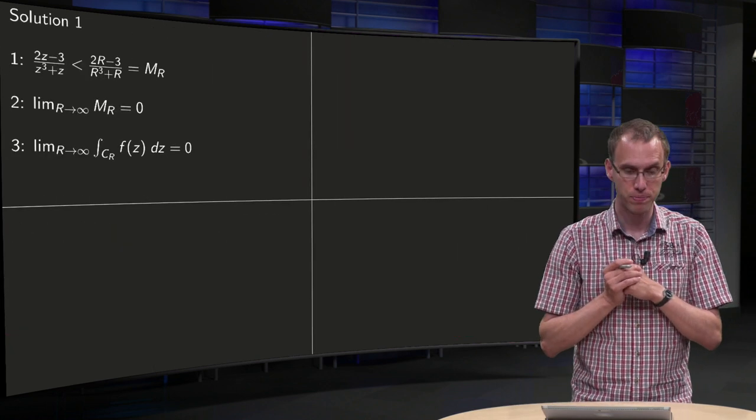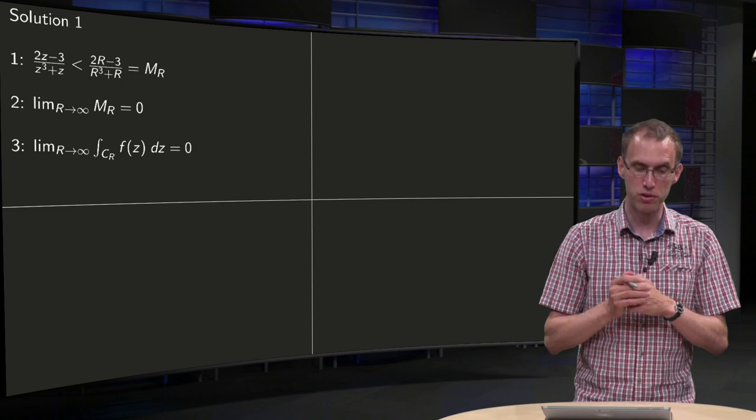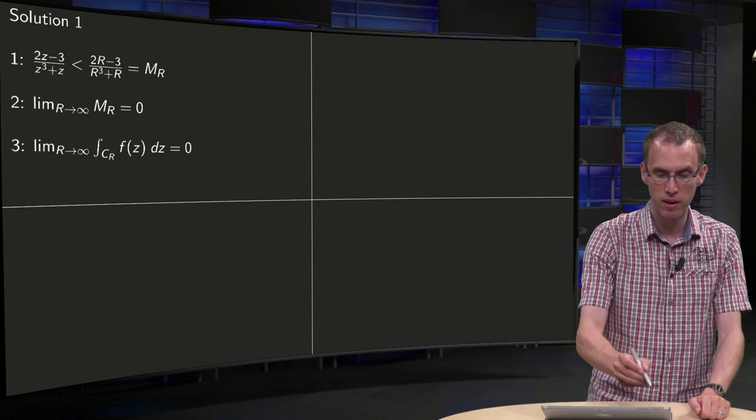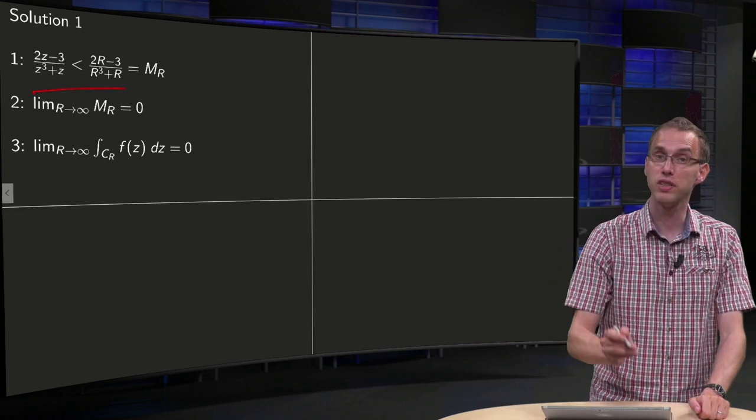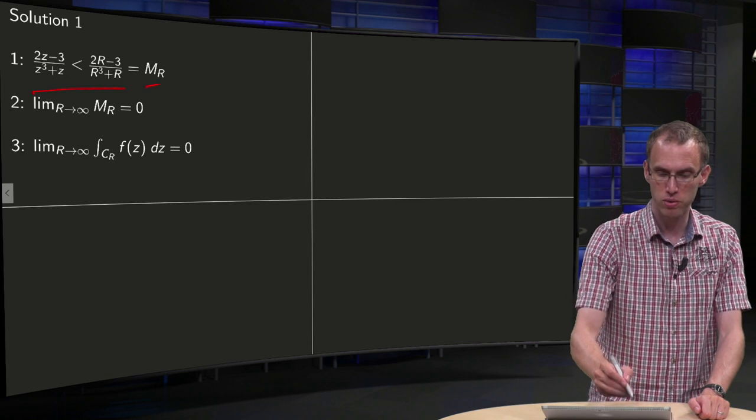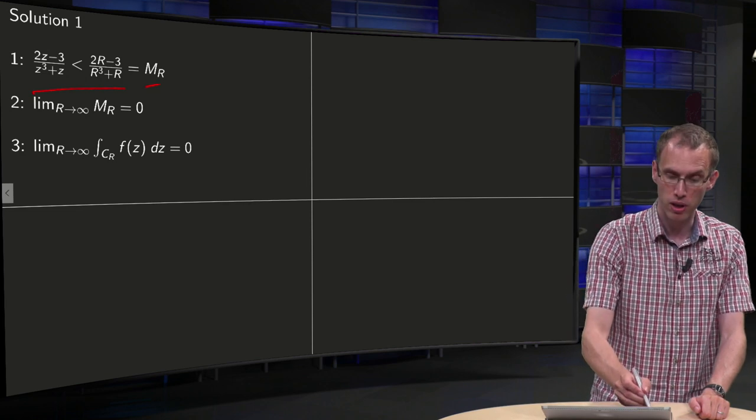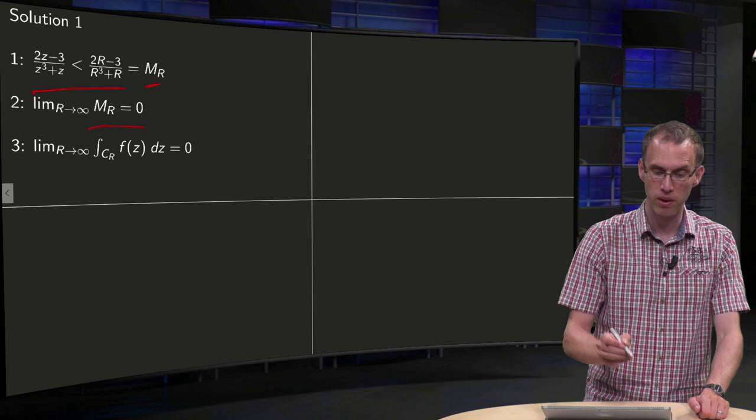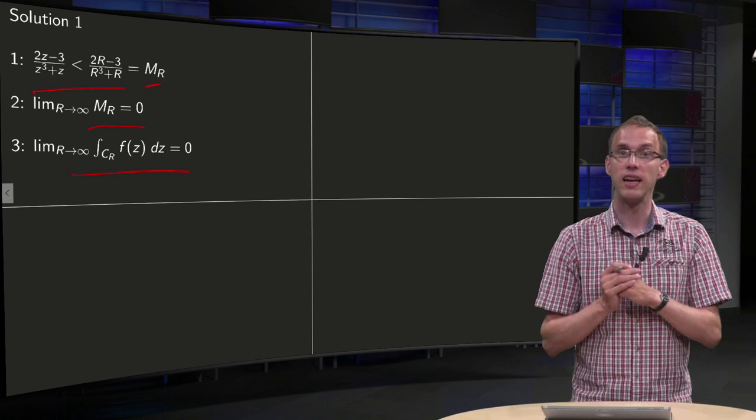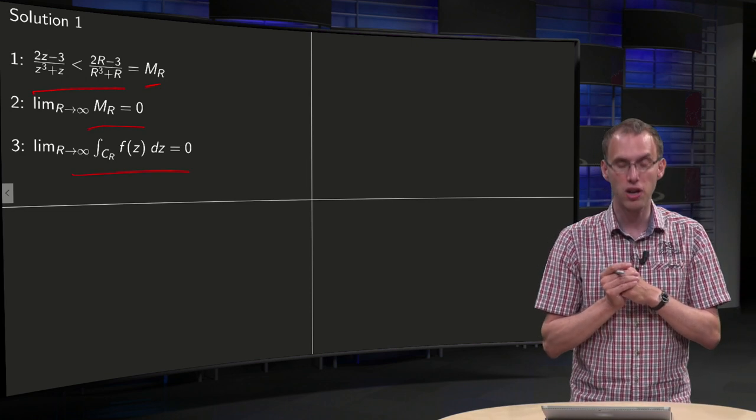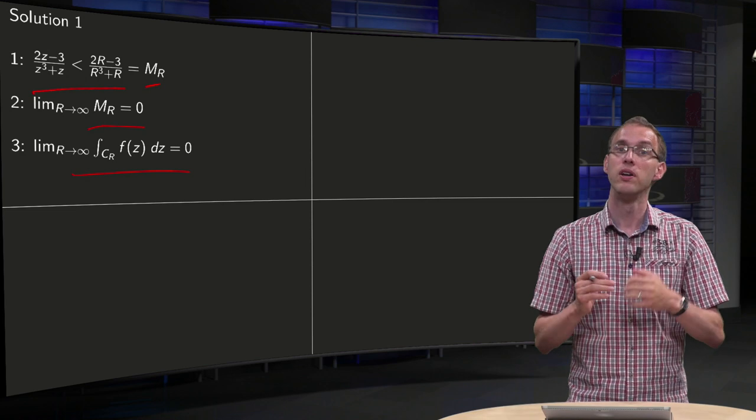So, solution 1. We have those three steps over here. First of this inequality, we set our MR equal to that one, and then we show limit R to infinity of MR equals 0, and we conclude that limit R to infinity of the integral CR f dz equals 0.